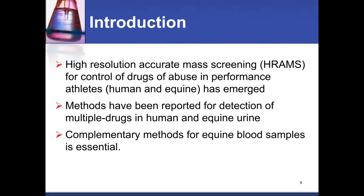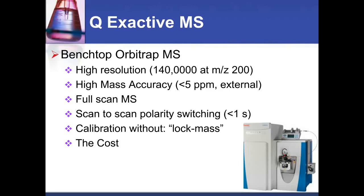To address this, we investigated high-resolution accurate mass techniques, which have been used in human Olympic athletes and other athletic competition in recent years. These methods have been reported for detection of both human and equine drugs, and they represent a complementary testing program that can also be employed with blood samples, which may ultimately be a better screening matrix. But first I want to talk specifically about the method we've developed using the Q-Exactive MS instrument.